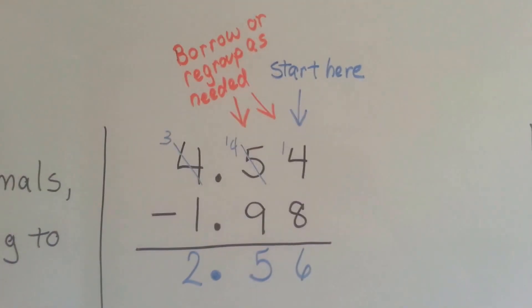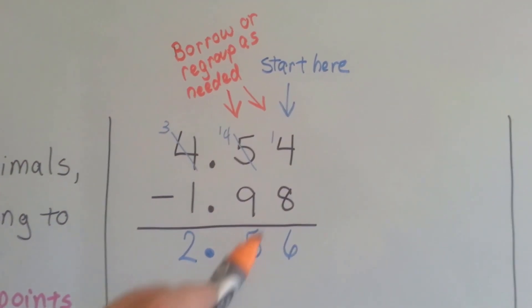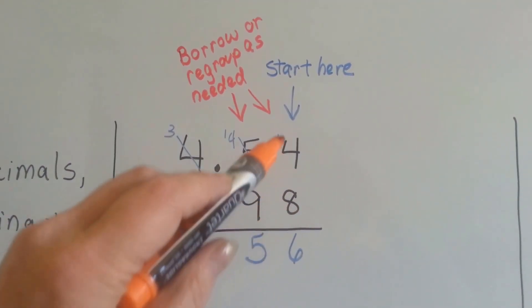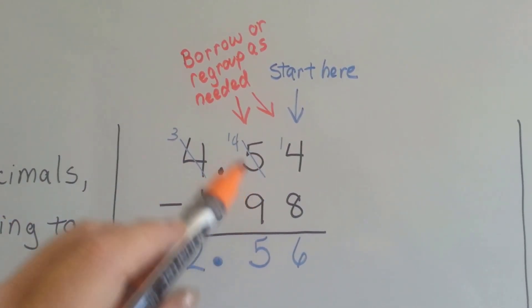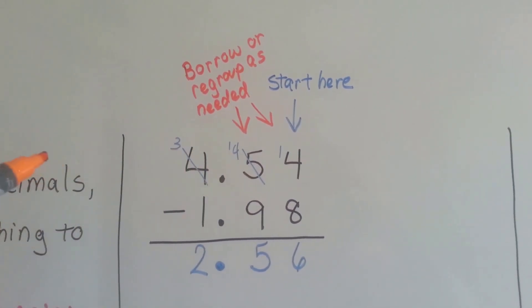We would borrow or regroup as needed, starting on the far right side. If we had 4 and 54 hundredths minus 1 and 98 hundredths, we could borrow just as if it was a whole number.